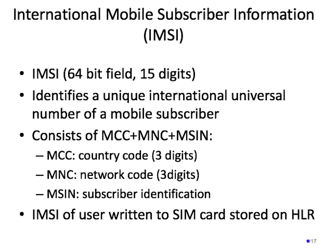In addition to the IMEI, we have something called an IMSI, which is the International Mobile Subscriber Identity. The IMSI is a 64-bit field, or 15 digits, and it identifies a unique international universal number of a mobile subscriber. It consists of three main fields: an MCC, an MNC, and an MSIN. The MCC is the country code of the subscriber, the MNC is the network code — both three digits each — and the MSIN is the subscriber identification. The IMSI is written onto the SIM card and is also stored on the HLR, or Home Location Register.